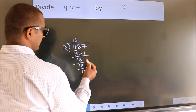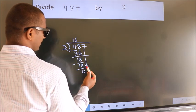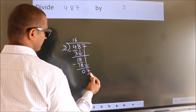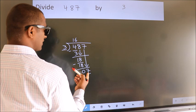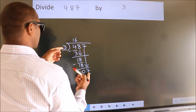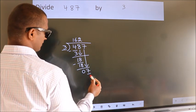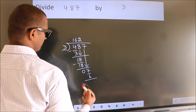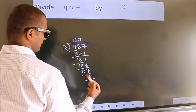After this, bring down the beside number. So, 7 down. 7. A number close to 7 in 3 table is 3, 2, 6. Now, we subtract. We get 1.